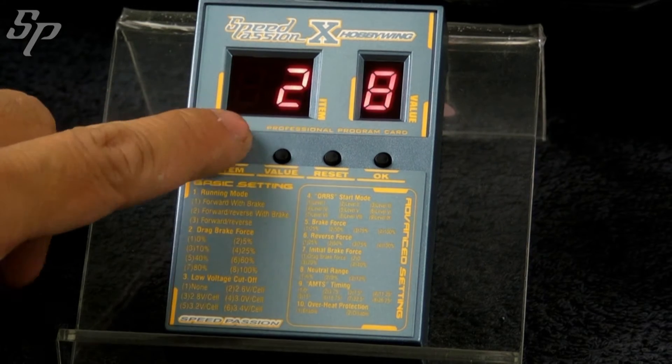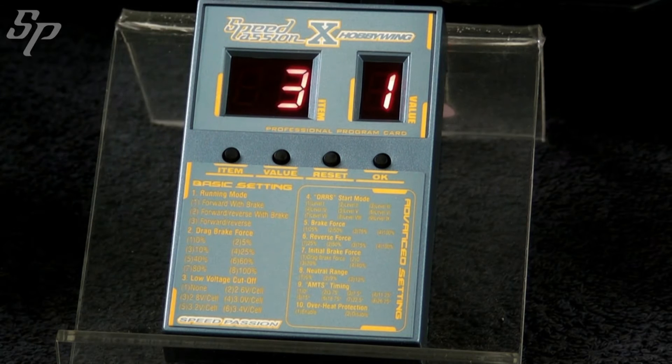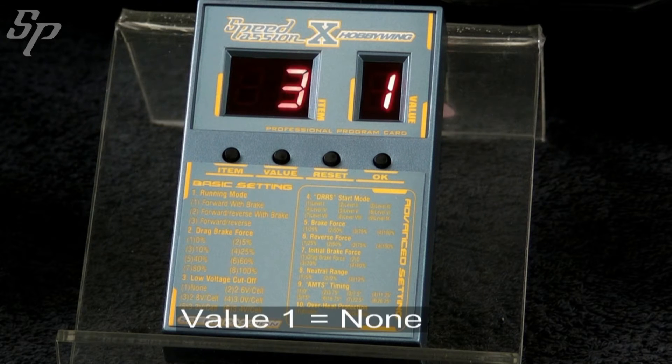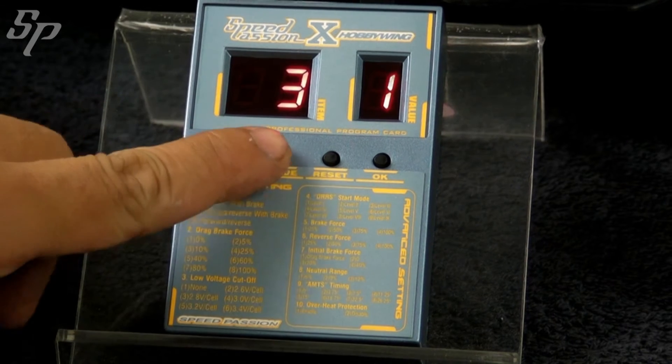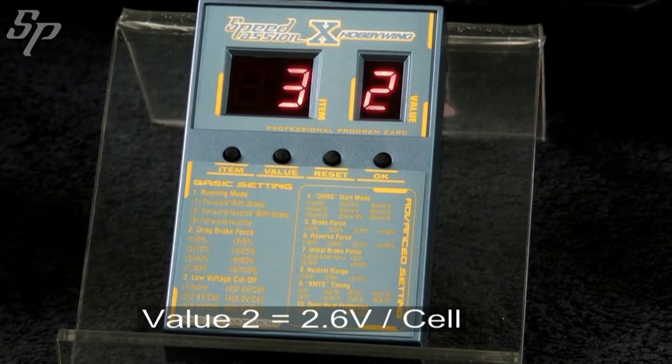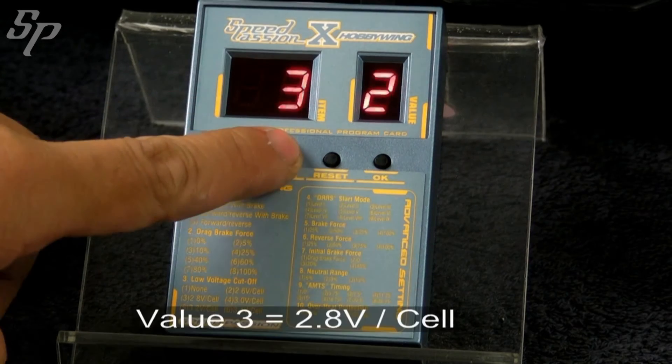Item 3 is about low voltage cutoff. It aims at extending the battery life. 1 means no protection at all. Value 2 to 6 refers to different levels of protection.